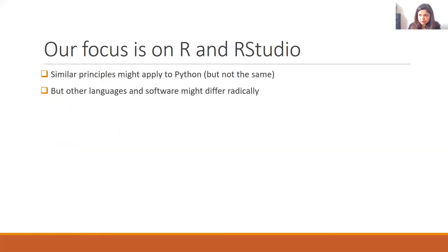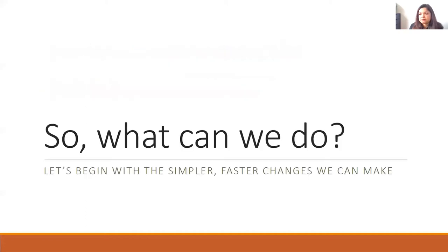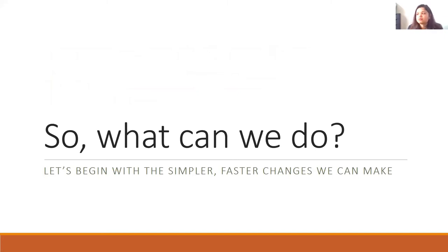Our focus is in R and R Studio. Similar principles might apply to Python — Python is very close but still not the same — and other languages and software might differ radically. So that was an introduction, perhaps a little too long, but it's good to set the stage before we progress further. So what can we do to make our code more readable? Let's begin with the simpler, faster changes.